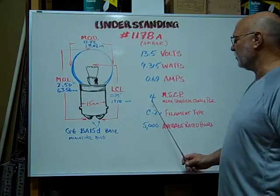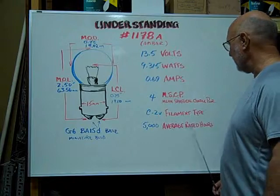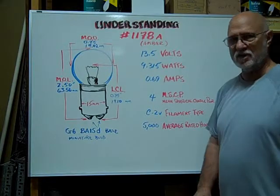The mean spherical candle power is 4. The filament type is a C-2V. The average rated hours are 5,000 hours.